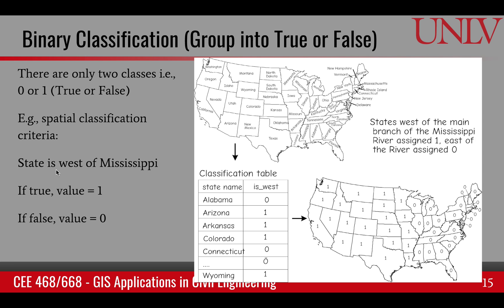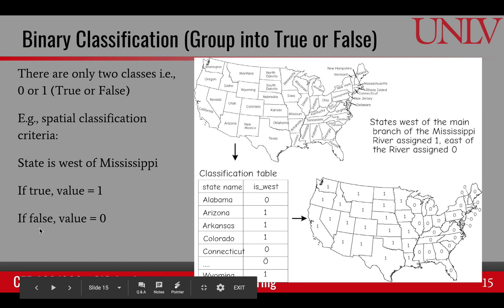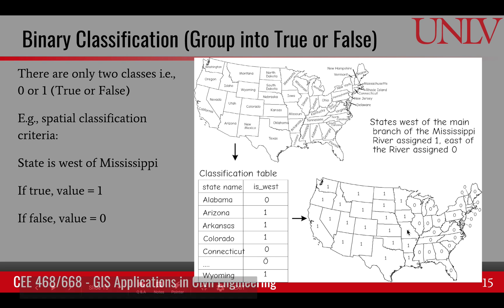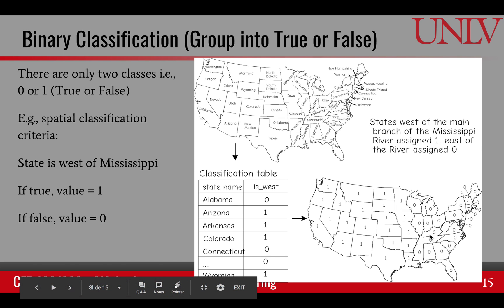Consider this spatial criteria: find all the states west of Mississippi. If this criteria is true for a state, it will get value 1, and if it's false for a state, it will get value 0. Here is the Mississippi River, and based upon the river, everything west of it gets 1, everything east of it gets 0, giving us a binary classification.